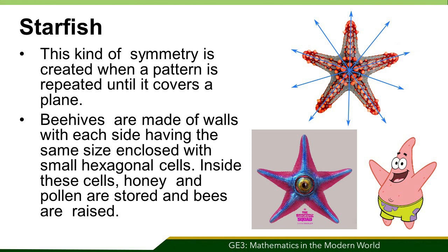The starfish also joins the party of symmetries. Starfish have a radial fivefold symmetry. Each arm portion of the starfish is identical to each of the other regions.